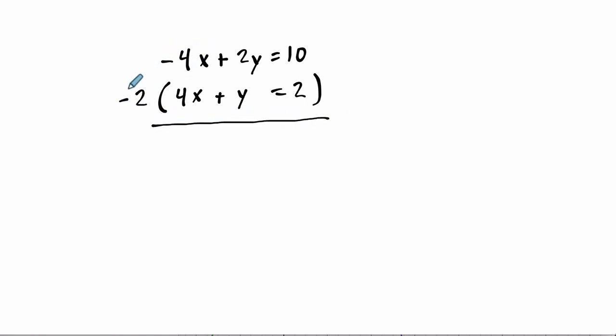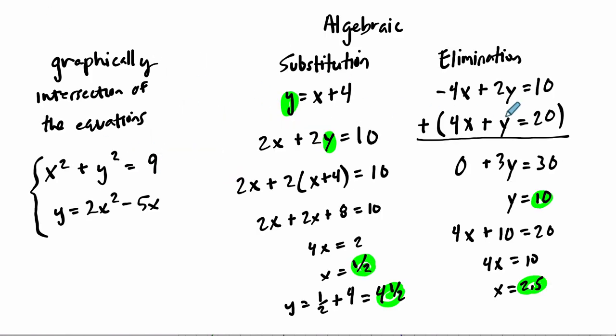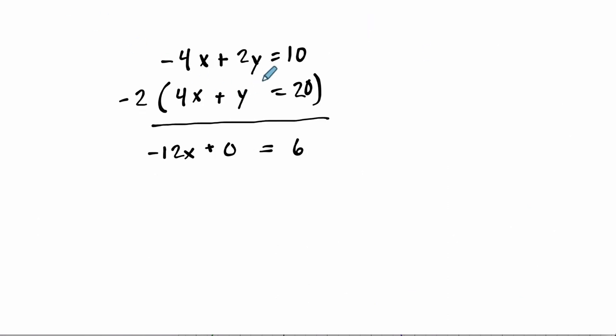You would have negative 4x minus, this is minus 8x, so that's negative 12x. 2y minus 2 times y is 0. And 10 minus 2 times 20 is 10 minus 40, which is negative 30. And if you solve for x, you get x is 2 and a half. And then you could replug in to get y equals 10, the same solution.